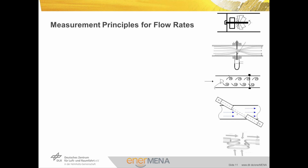Various principles are available for flow rate measurements in HTF systems of parabolic trough power plants. A turbine flow meter measures the flow rate as a function of the turbine speed correlated to the volumetric flow rate. In an orifice meter, the passing of the flow through an orifice results in a pressure drop, which increases with increasing flow rate. Alternatively, nozzles can be used with the same measurement principle but smaller pressure drops. Vortex meters involve the insertion of a bluff body into the fluid flow, measuring the frequency of vortex shedding in the wake in terms of pressure fluctuations.